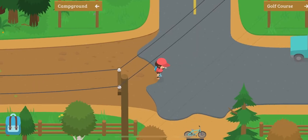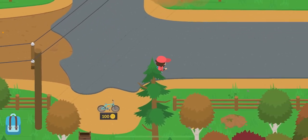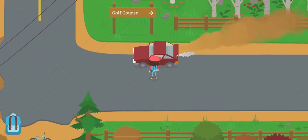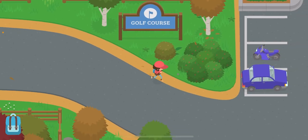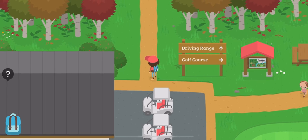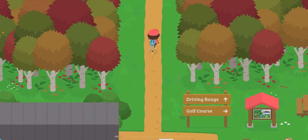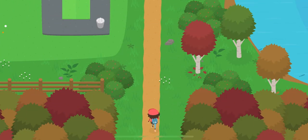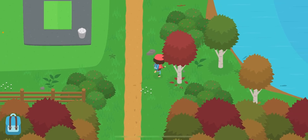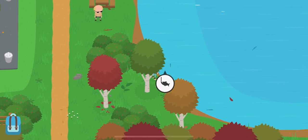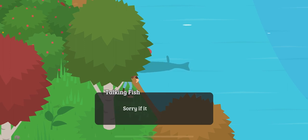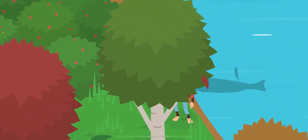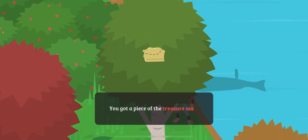After you exit the campground you should be able to keep on going right and you'll see the sign called the golf course. Just keep on going in that direction. After you arrive at the golf course you're gonna go up to the driving range. And on the right you're gonna see this pool of water. Go ahead and press the fish icon. Boom, your fifth treasure piece.